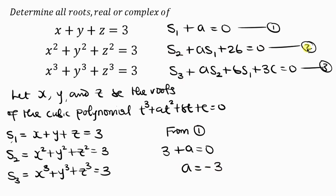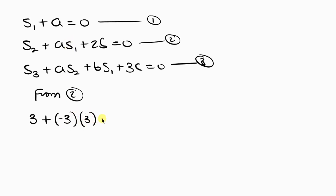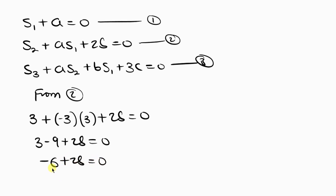Solving equation 1: S1 is 3, so 3 plus a equals 0, giving a equal to negative 3. Solving equation 2: S2 is 3, a is negative 3, S1 is 3, so we get 3 minus 9 plus 2b equals 0, which gives negative 6 plus 2b equals 0, so 2b equals 6, and therefore b equals 3.